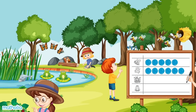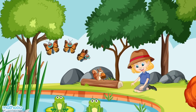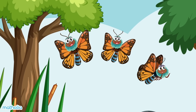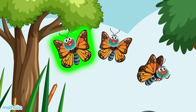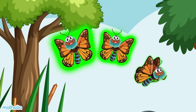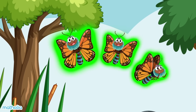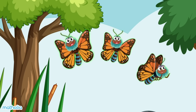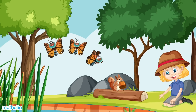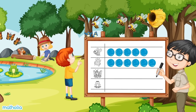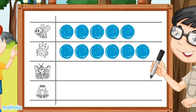There are some butterflies. How many can you see? One, two, three. There are three butterflies. Draw three circles on our picture graph.